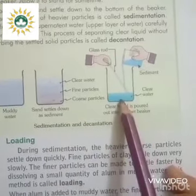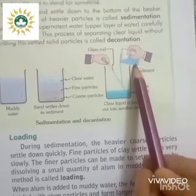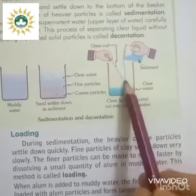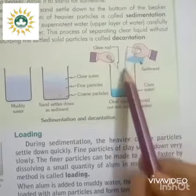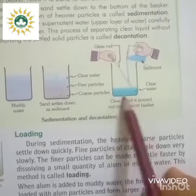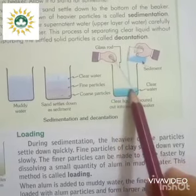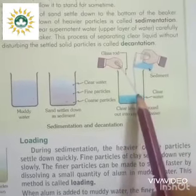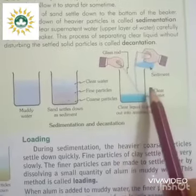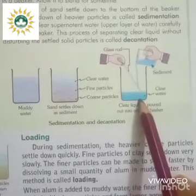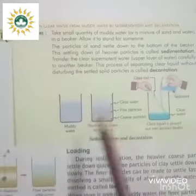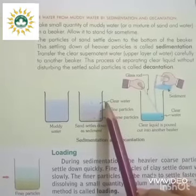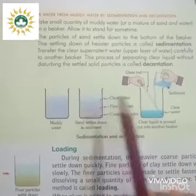You can see the sediments at the bottom of the beaker. With the help of a glass rod, the clear water is poured into another beaker. The glass rod is used to give the liquid a smooth flow, so it does not sprinkle or disturb the settled water. This is how clear water is separated from muddy water by sedimentation and decantation.